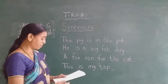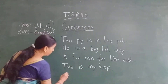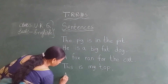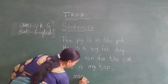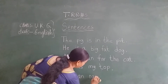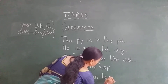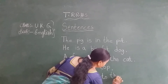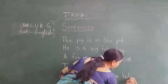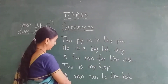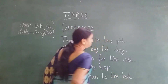Now next sentence: A man ran to the hut. A man ran to the hut. First letter is capital letter. A. Man: M-A-N. Man. Ran: R-A-N. Ran. A man ran to the hut. To: T-O. The: T-H-E. Hut: H-U-T. Hut. Now read the sentence: A man ran to the hut. Now put the full stop here.